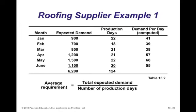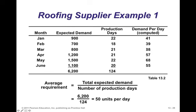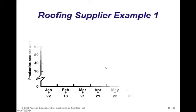Here's an example: a company that does roofing has demand for service. We have forecasted demand in units, and production days available — different months may have different production days, and February is a shorter month. Based on that we can figure out the demand per day: for example, 900 divided by 22. In this example, the lowest demand per day is around 38 units and the maximum is 68. It's always good to draw the demand profile alongside your available capacity.